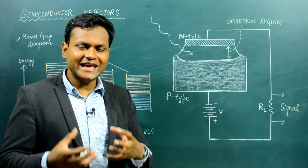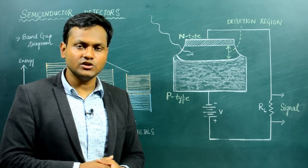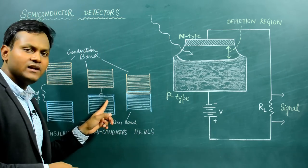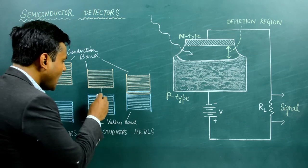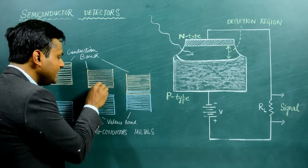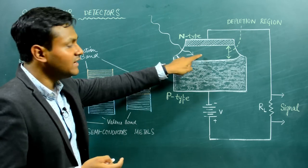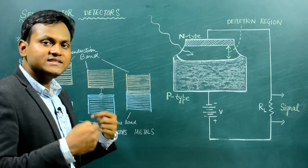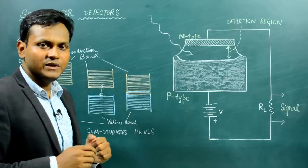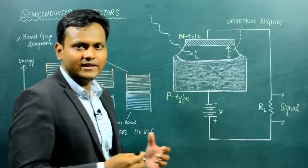When an external alpha particle enters the depletion layer, it leads to the creation of electron-hole pairs. It basically collides with the atoms and molecules in that region and transfers energy. The electrons in the valence band of the depletion layer absorb that energy and jump to the conduction band. When that happens, we end up getting a free electron and a hole. So the effect of an external alpha particle inside the depletion layer is the creation of electron-hole pairs.